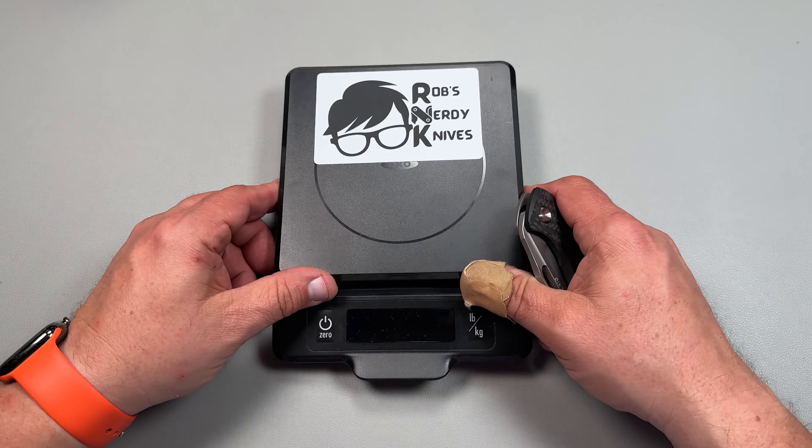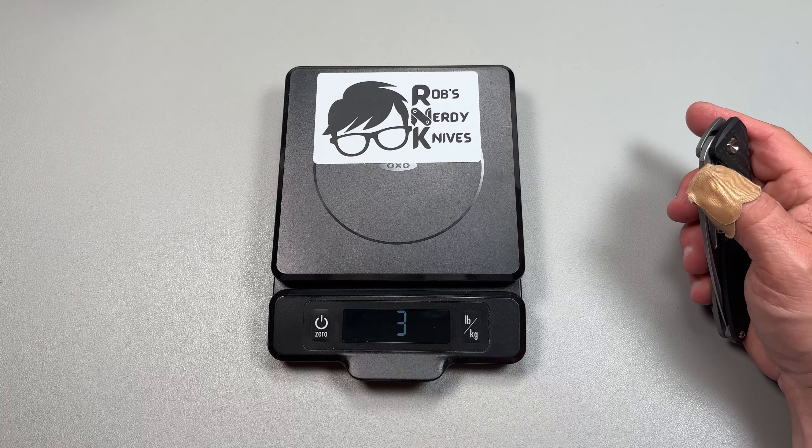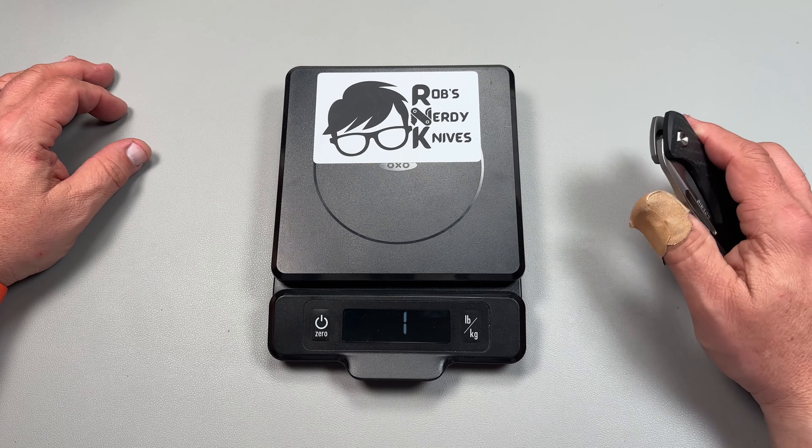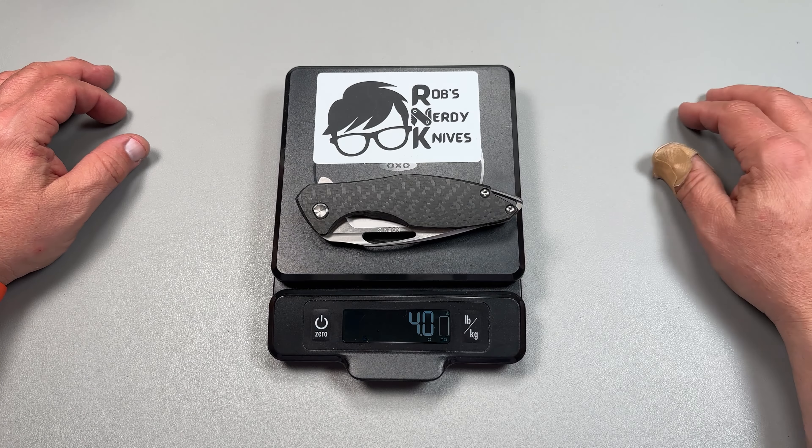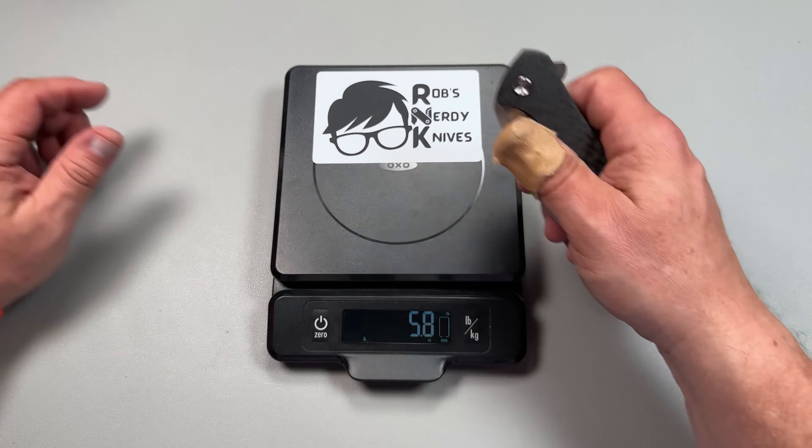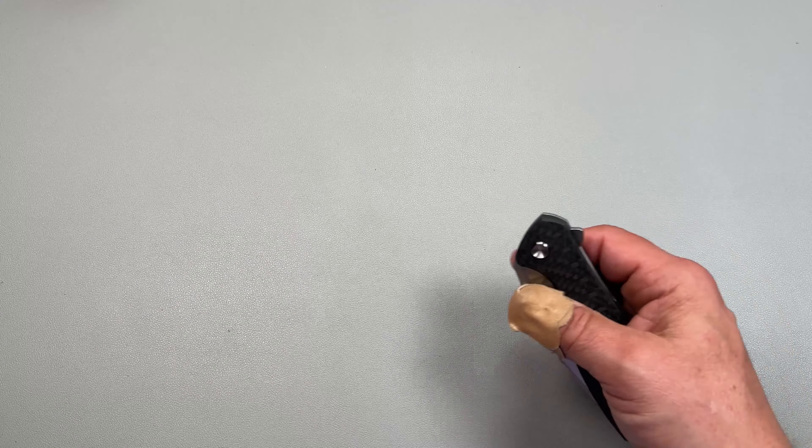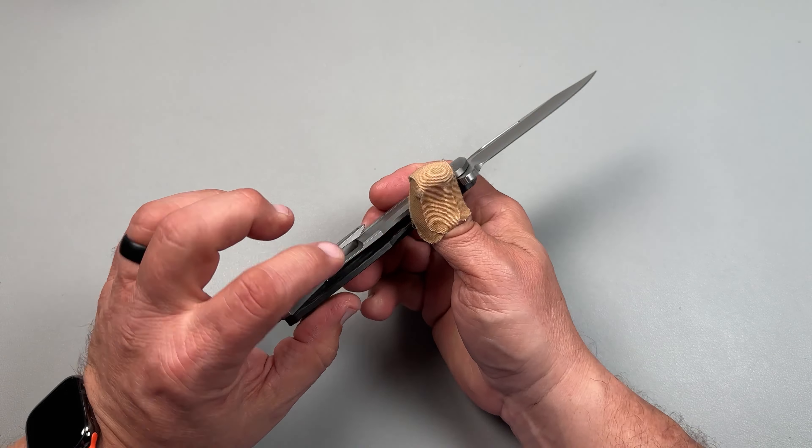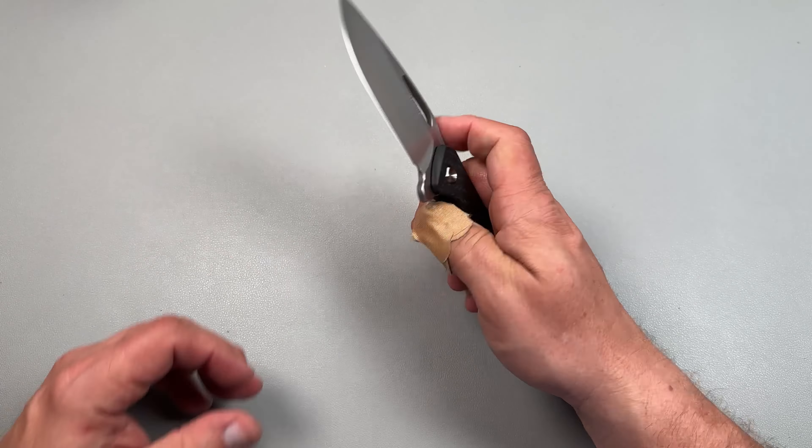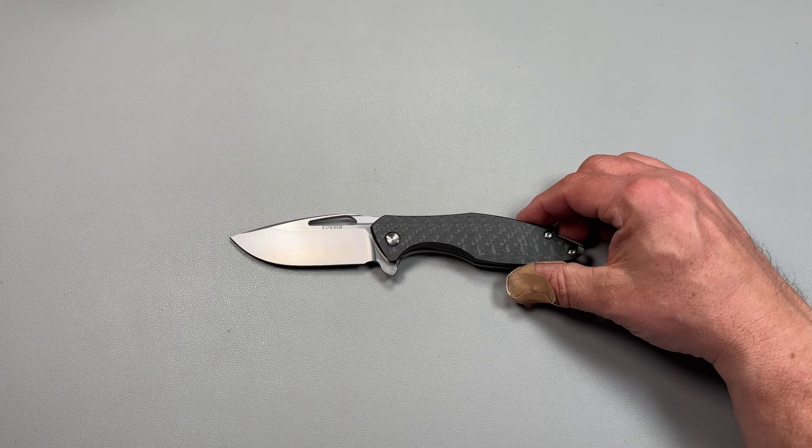So let's get into the measurements of the knife after I rambled for a long time. Four ounces because of the carbon fiber and a lot of the nice weight relief that's going on inside the scale. So weight relief here, weight relief here, that really removes a lot of that weight. So that's really nice.